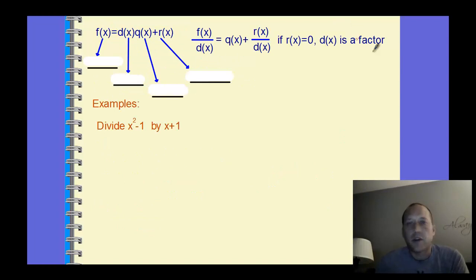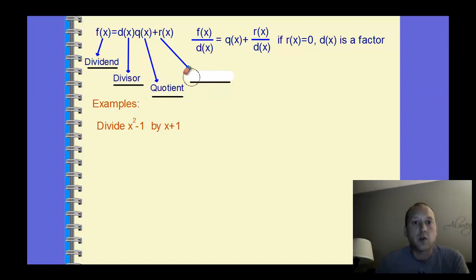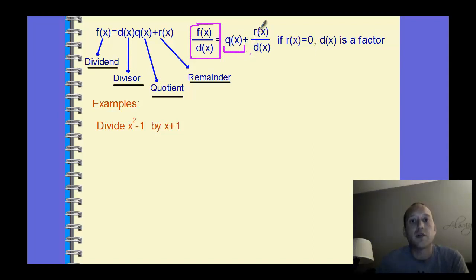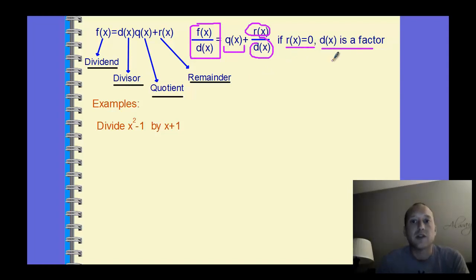Some terminology for dividing we should recall from basic math: when we are dividing, we have the dividend, divisor, quotient, and remainder. Writing it as a product, if we take f of x divided by d of x — our dividend divided by the divisor — what we get is our quotient plus the remainder over the divisor. When our remainder is zero, then our divisor is a factor and it's a solution.